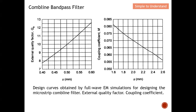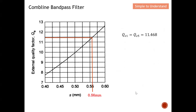From the EM simulation design curves for the microstrip comb line filter, we can obtain the external quality factor and coupling coefficient. For Qe1 = Qe5 = 11.468 (approximately 11.5), we draw a line on the external quality factor graph and find the gap is 0.56 mm. This is the first dimension determined from the design curves.